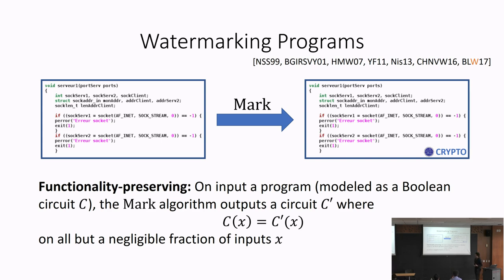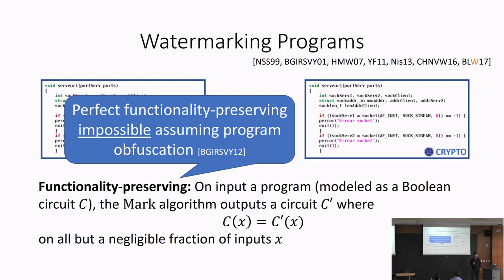One might ask why we don't require perfect functionality-preserving. The reason is that assuming the existence of cryptographic obfuscation — specifically indistinguishability obfuscation — perfect functionality-preserving watermarking is actually impossible.